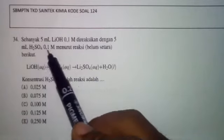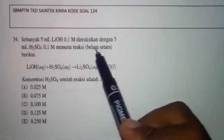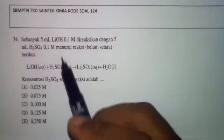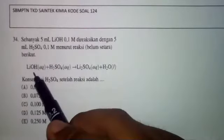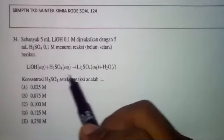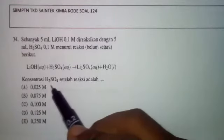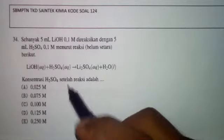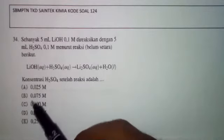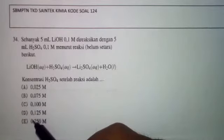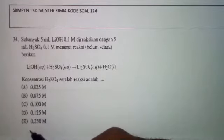Sebanyak 5 mililiter LiOH 0,1 molar direaksikan dengan 5 mililiter H2SO4 0,1 molar. Menurut reaksi yang belum setara: LiOH + H2SO4 → Li2SO4 + H2O. Konsentrasi H2SO4 setelah reaksi adalah... A. 0,025 molar, B. 0,075 molar, C. 0,1 molar, D. 0,125 molar, E. 0,250 molar.